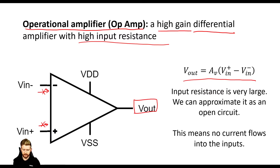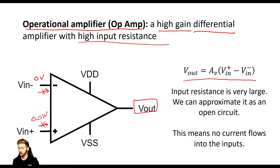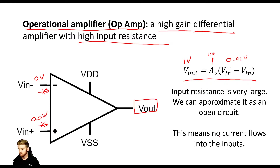Let's do a quick example. Say that on VN- I have 0 volts, and on VN+ I have 0.01 volts. There is a difference of 0.01 volts. So Vout is going to be 0.01 volts times AV. If AV is 100, then Vout is going to be 1 volt — amplifying the difference between those two inputs. The input resistance is very large, approximated as an open circuit, so no current flows into those terminals.